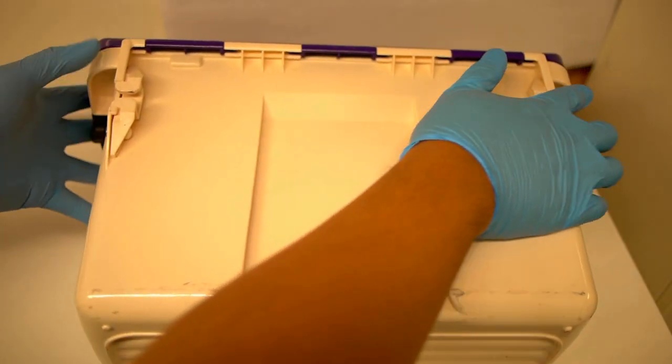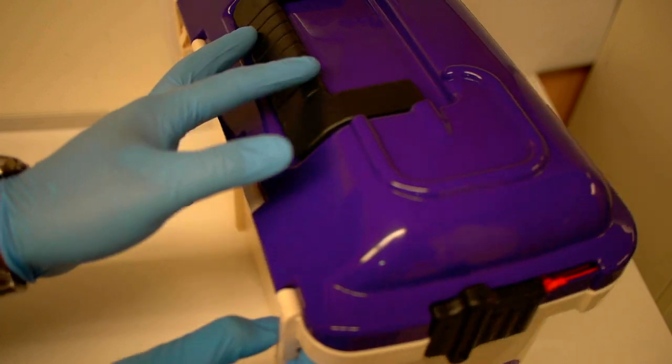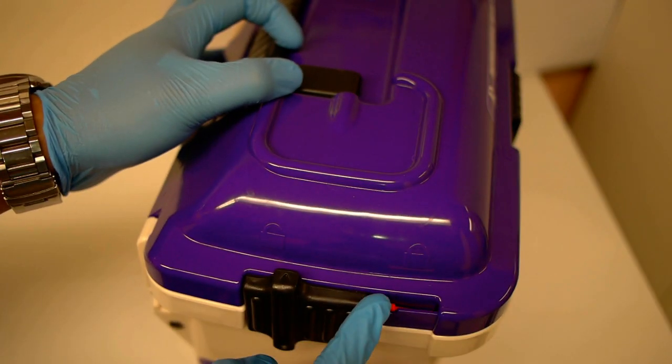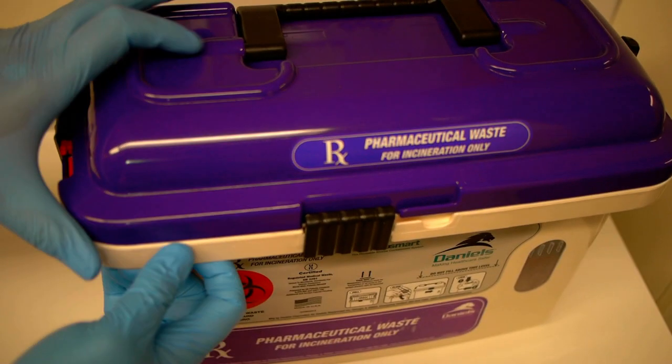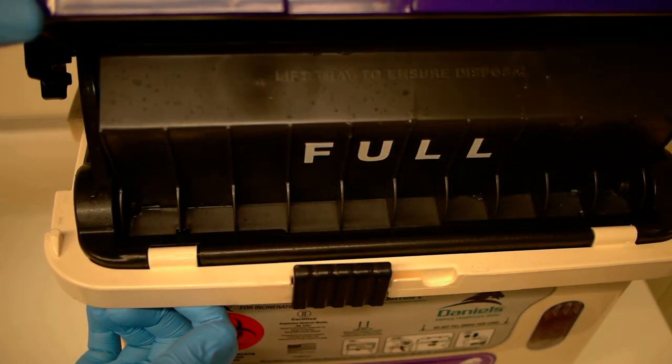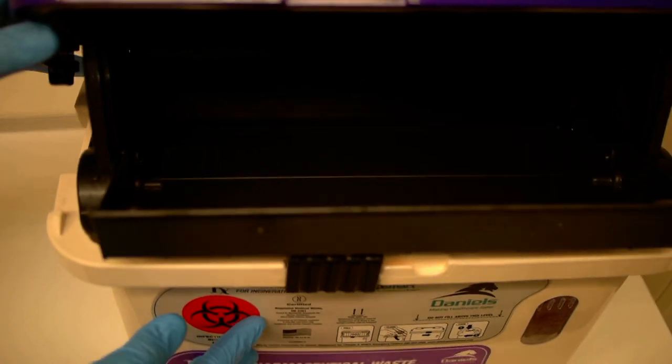Now that both latches have been unlocked, we stand it back up. See, it's unlocked, you can see the red part. Unlock the front, we just lift up the cover, and there you go. Just like that. Now it's ready for use.